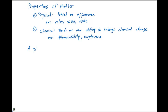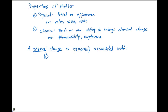A physical change is generally associated with a phase change, a change in size, or a change in texture. When we have a physical change, we typically change the appearance, but the chemical identity of the substance is not changed. These changes are typically reversible — when we melt ice from a solid to liquid water, we can then freeze it back again from a liquid to a solid.